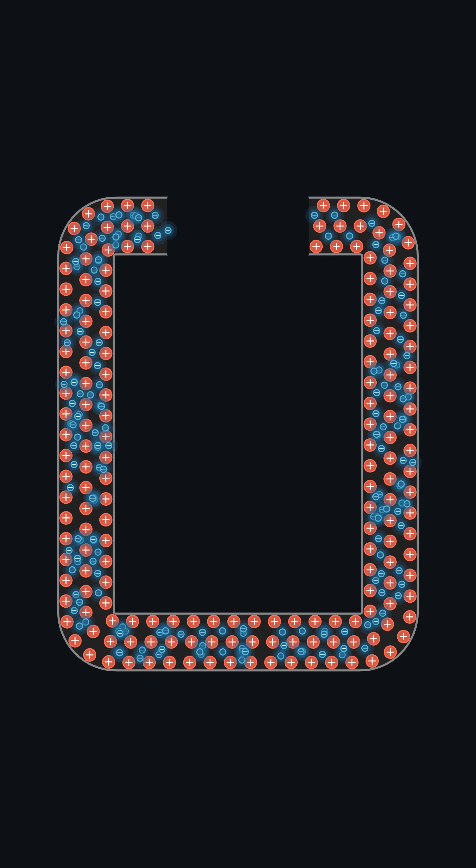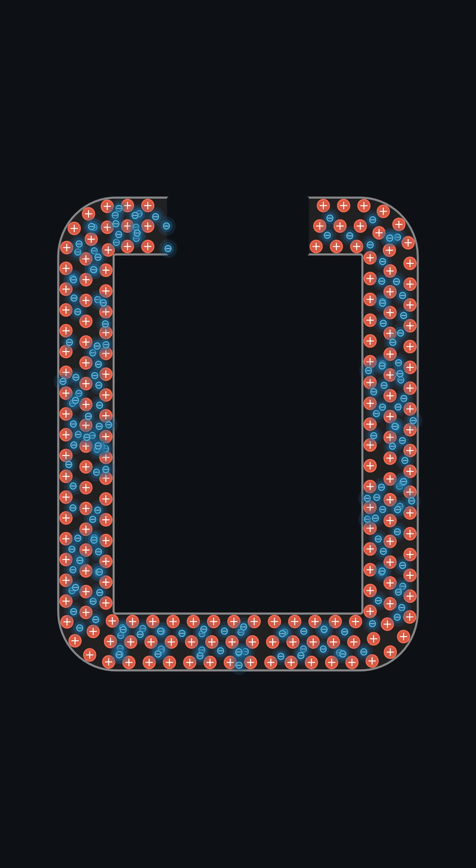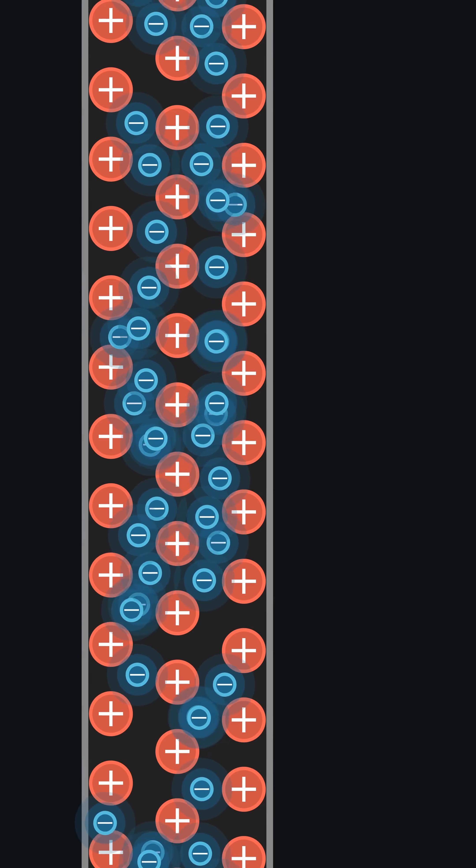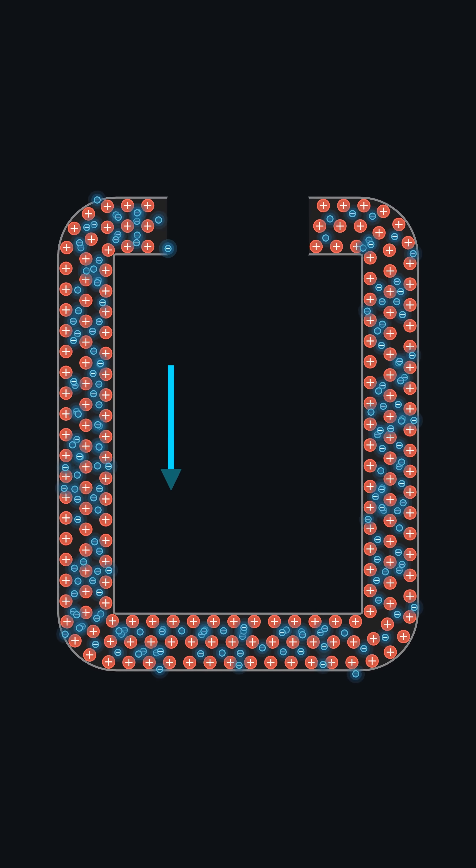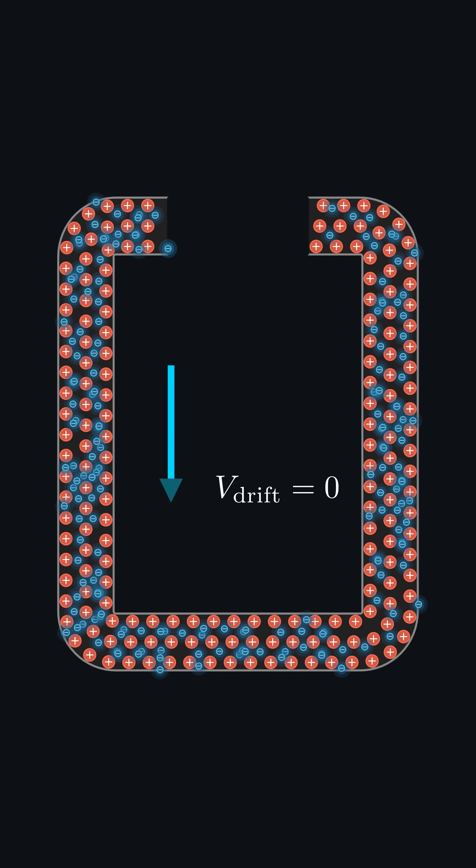Inside a metal wire, electrons are in constant chaos, scattering in every direction, colliding with the vibrating positive ion cores. On average, they go nowhere, no net movement.